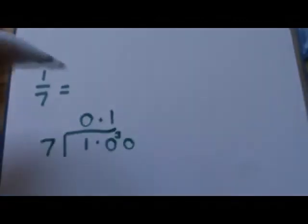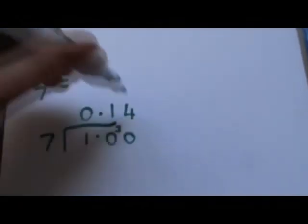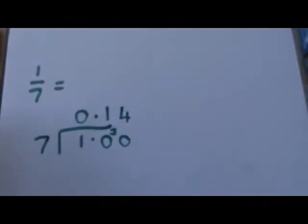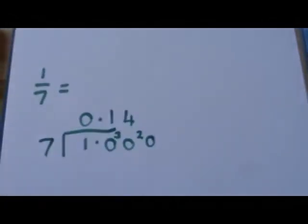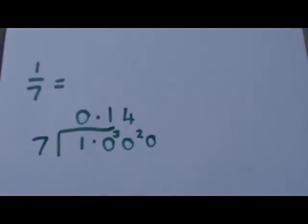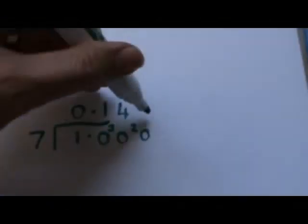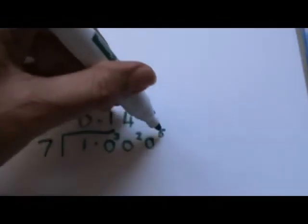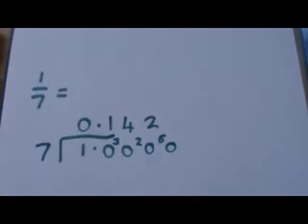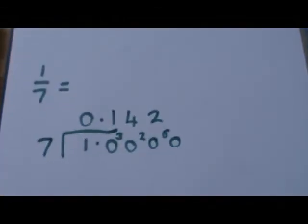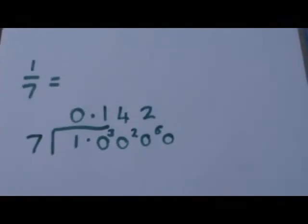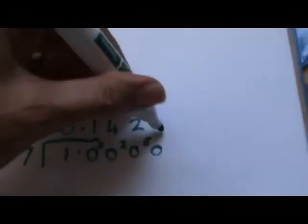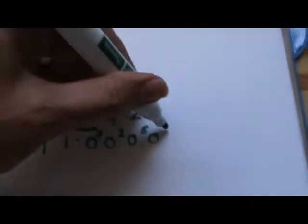Sevens into 30, so that goes four times. Four sevens are 28, so we've got two left over. Sevens into 20, so that just goes two. Two sevens are 14, so we've got six left over. How many sevens in 60? Seven sevens are 49, so that goes eight. Seven eights are 56. Four left over.